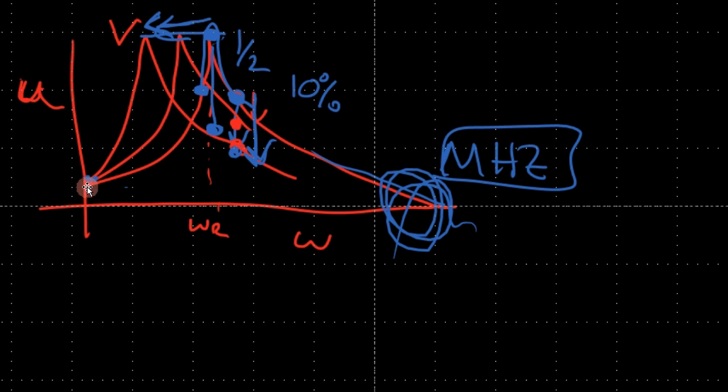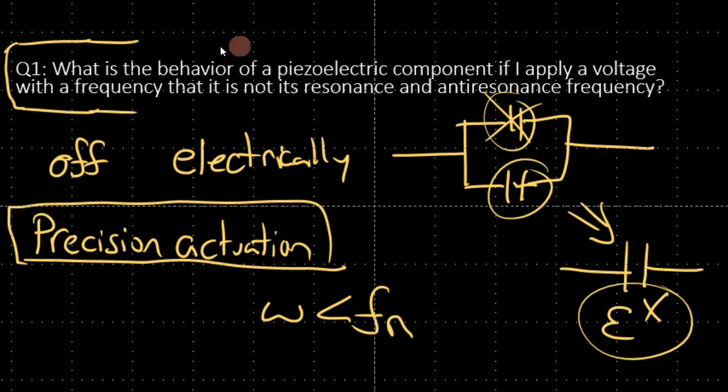Off-resonance is sort of a very much a plateau. It sort of picks up slowly and there's a constant displacement region which happens at off-resonance until a certain frequency where things start to pick up a bit. Okay, so thanks for watching. I hope this answered the question: what is the behavior of a piezoelectric component if I apply voltage with a frequency that is not its resonance and anti-resonance frequency?